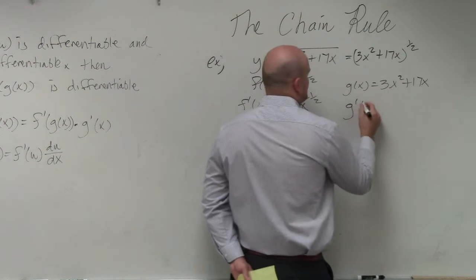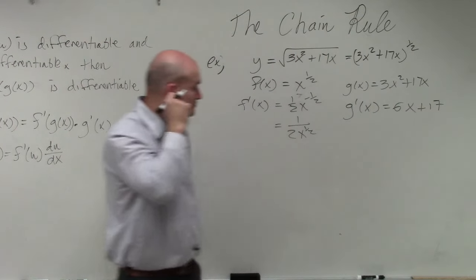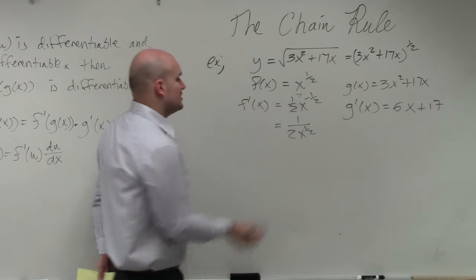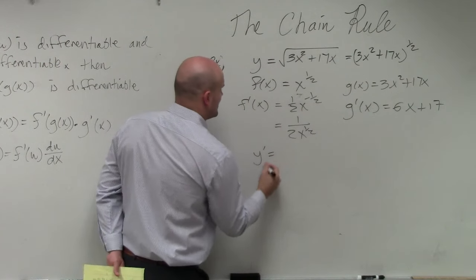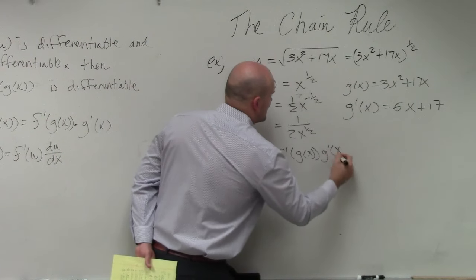Therefore, g prime of x equals 6x plus 17. So to apply the chain rule, it's going to be f prime of g of x times g prime of x.